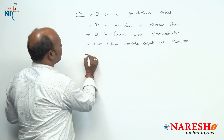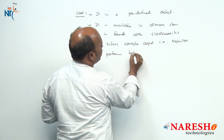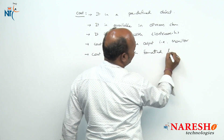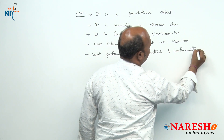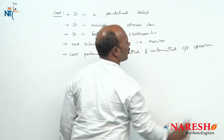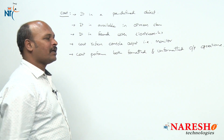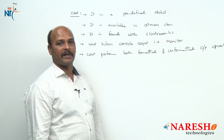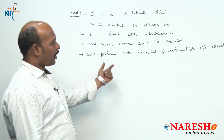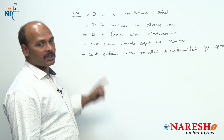Cout performs both formatted and unformatted output operations. We can get formatted or unformatted outputs using cout.